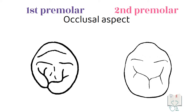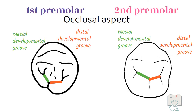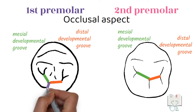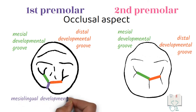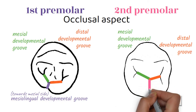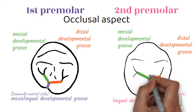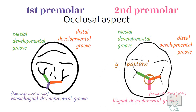Lastly, both premolars have three developmental grooves: the mesial developmental groove and distal developmental groove, but the third groove in the first premolar is the mesolingual developmental groove, whereas in the second premolar it is the lingual developmental groove. Moreover, the grooves in the second premolar form a Y-shaped pattern, which is not present in the first premolar.